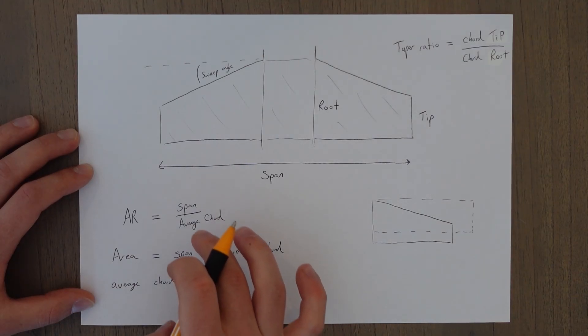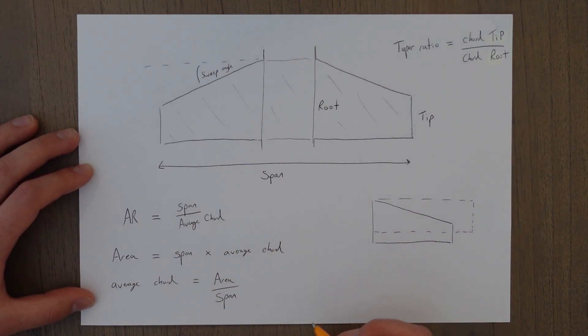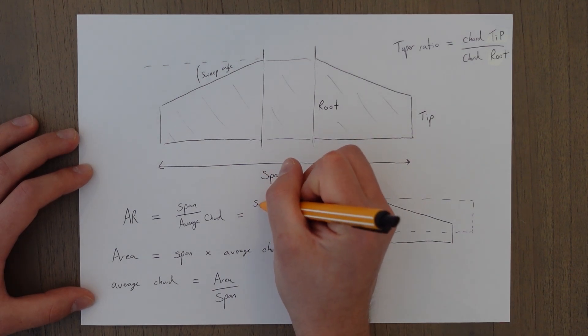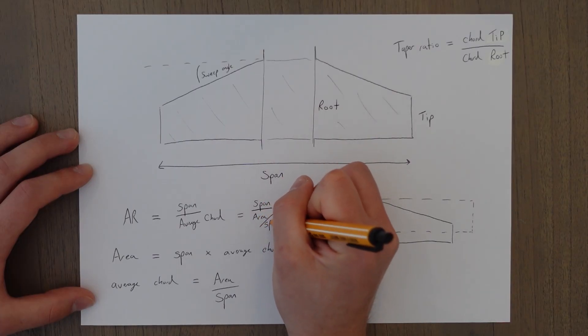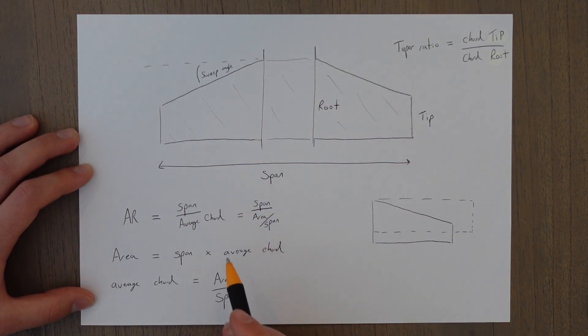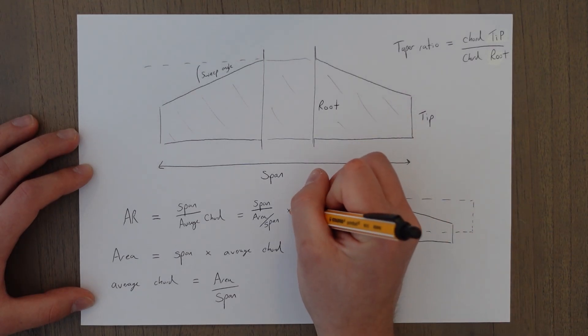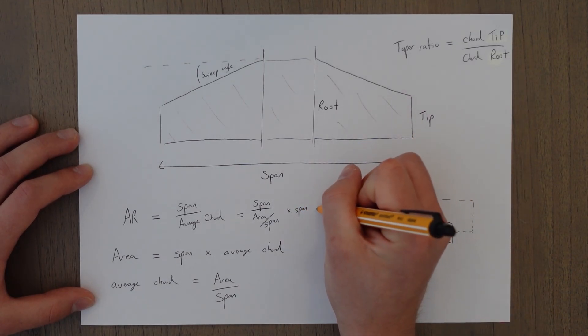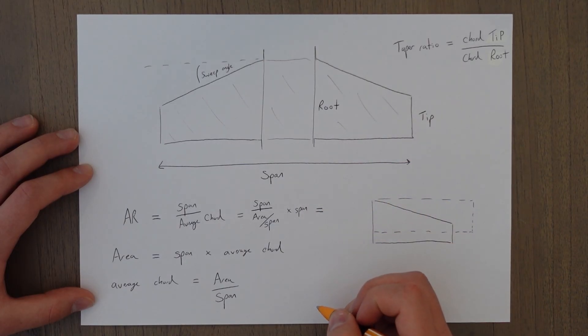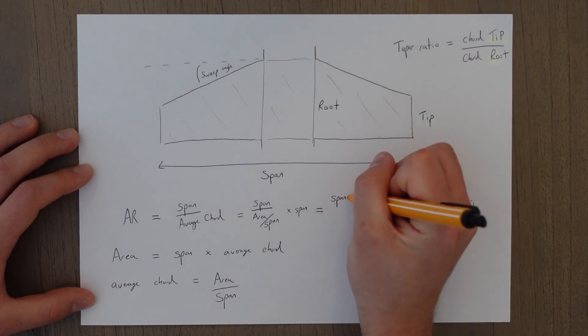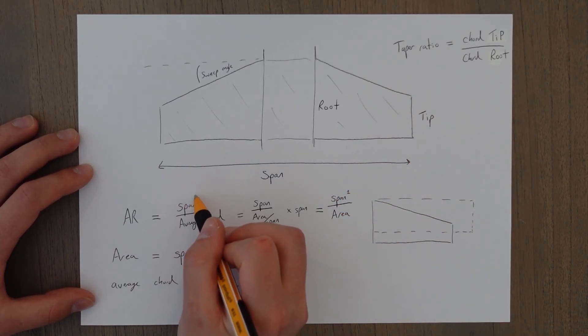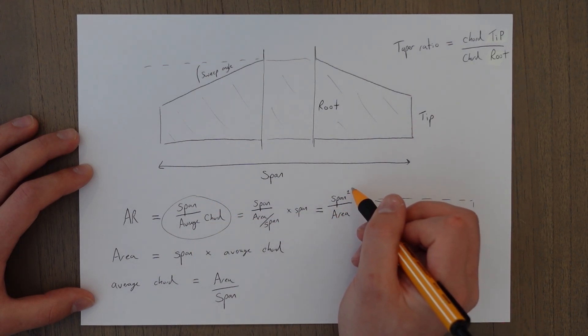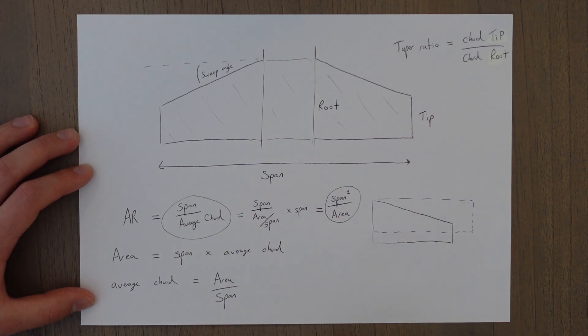You then substitute this in the average chord. To do a bit of maths you end up with span over area over span. And then we don't like that on the bottom so what you can do is multiply throughout by the span and end up with another formula for aspect ratio which is span squared over area. So aspect ratio is either span over average chord or span squared over area. And high aspect ratio wings are very long and very thin.